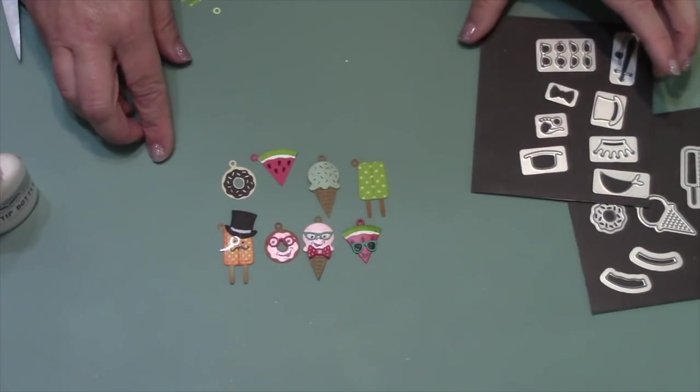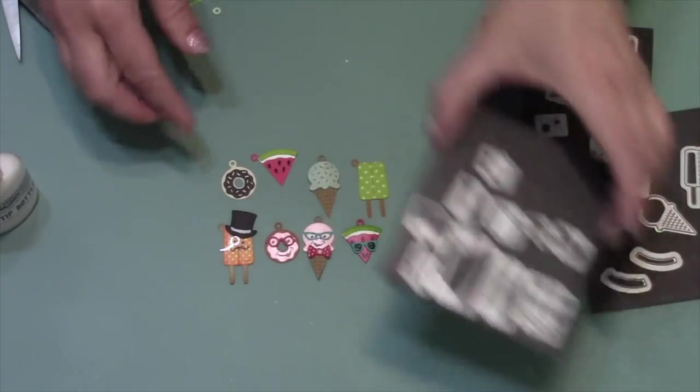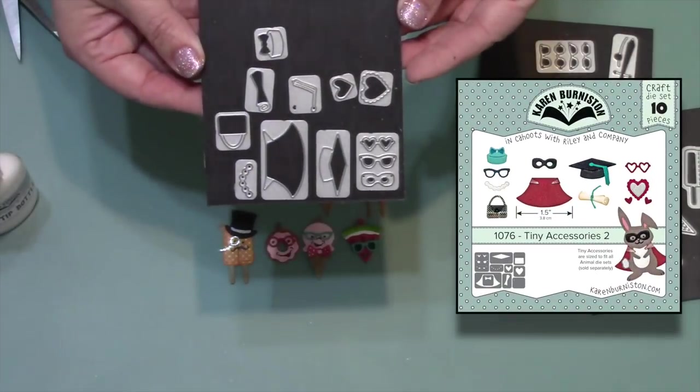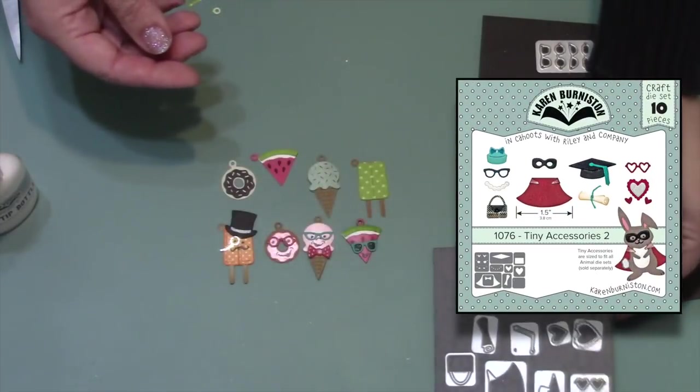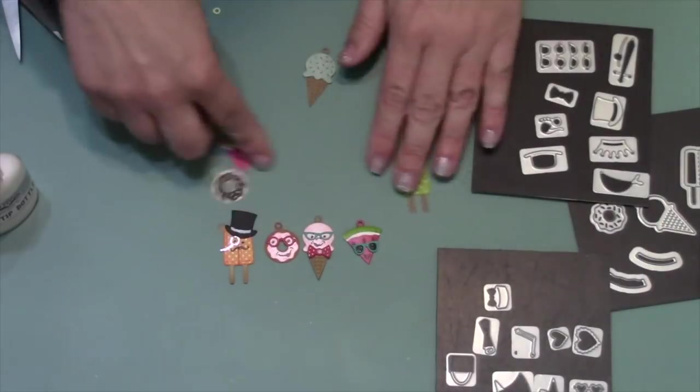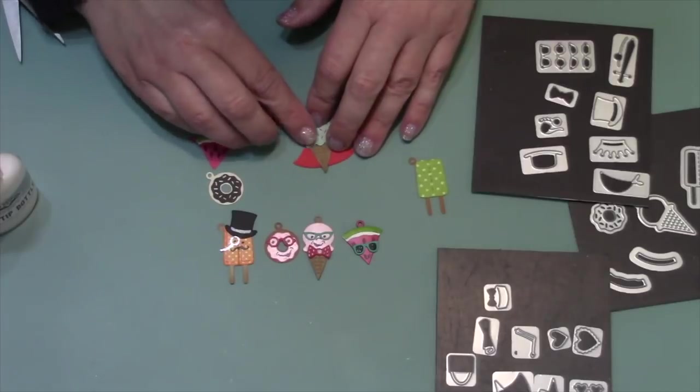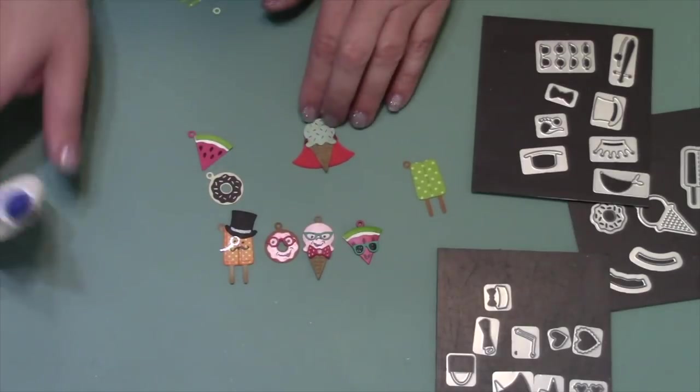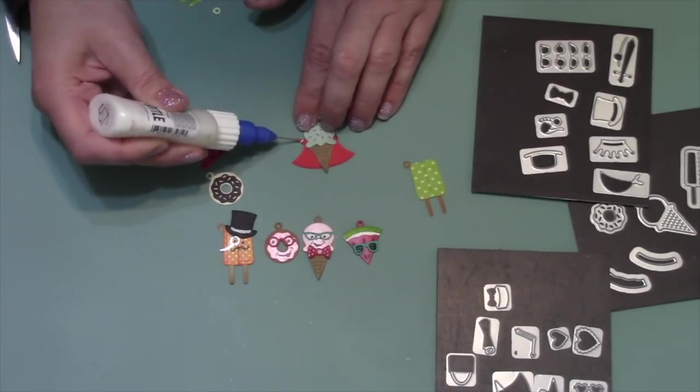For this next set, I'll use both sets, so I'll use some of the pieces out of Tiny Accessories 1 but then also some out of Tiny Accessories 2. I'll start first with a superhero ice cream cone.